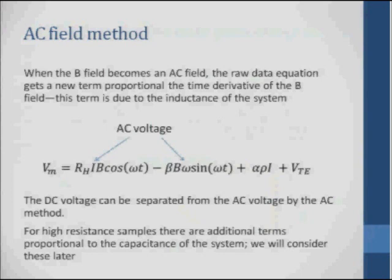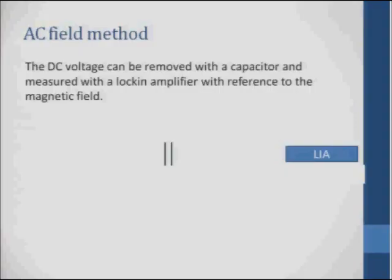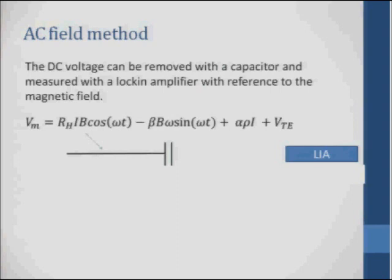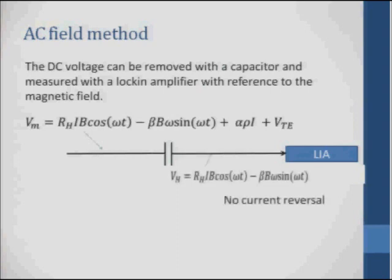Over here we still have those voltages, but in fact they're DC voltages. So we managed to make the voltage we want to measure AC, and brought along this other little AC voltage that we'll have to deal with, while keeping the troublesome offset voltages as DC. That makes life easier because now I can take my input signal, put a capacitor in, and on the other side of the capacitor I've gotten rid of my DC terms — without using current reversal. I've used frequency space to separate the Hall voltage from the DC voltage using the capacitor.